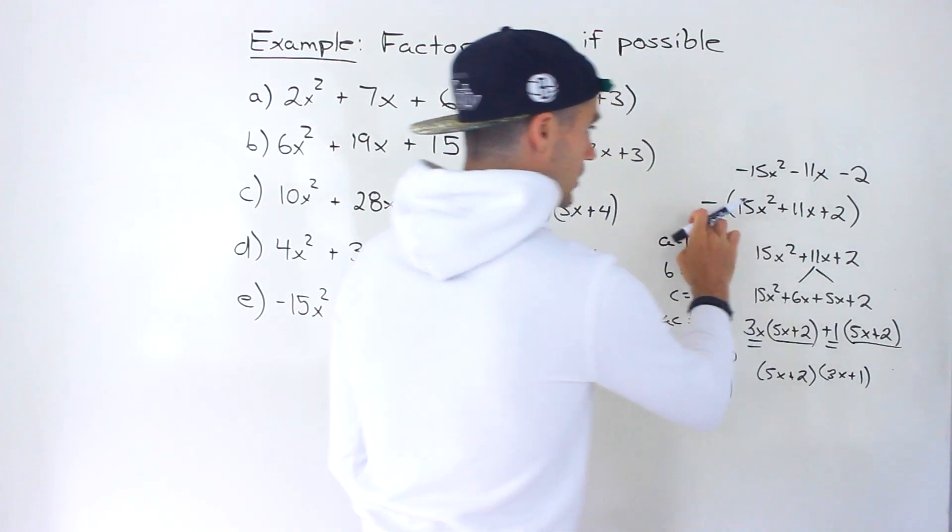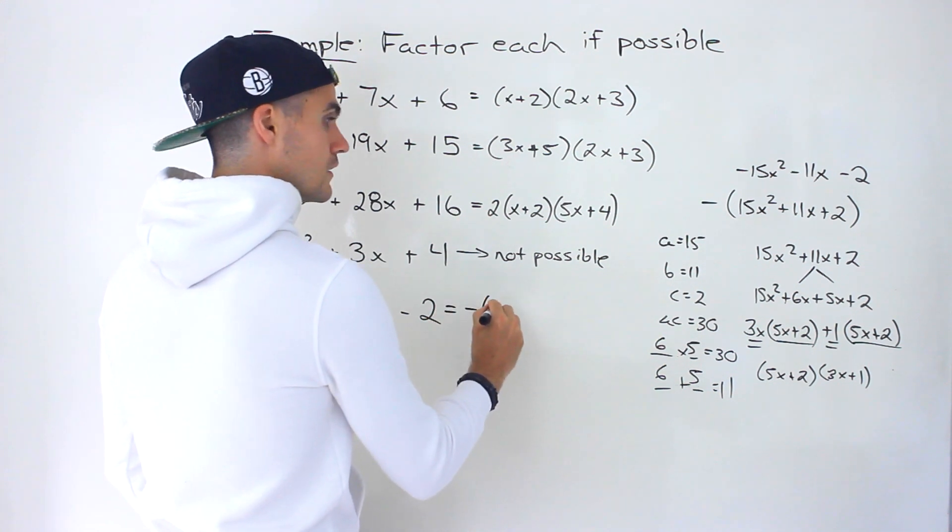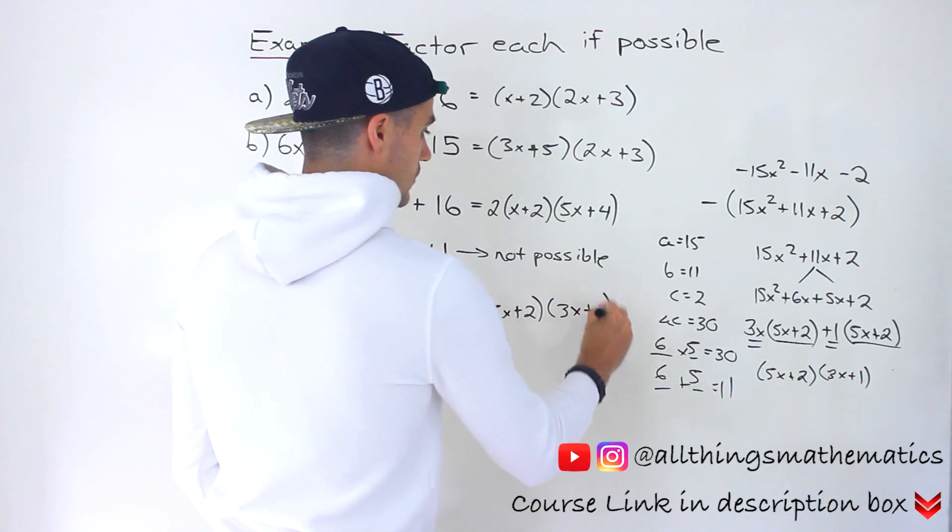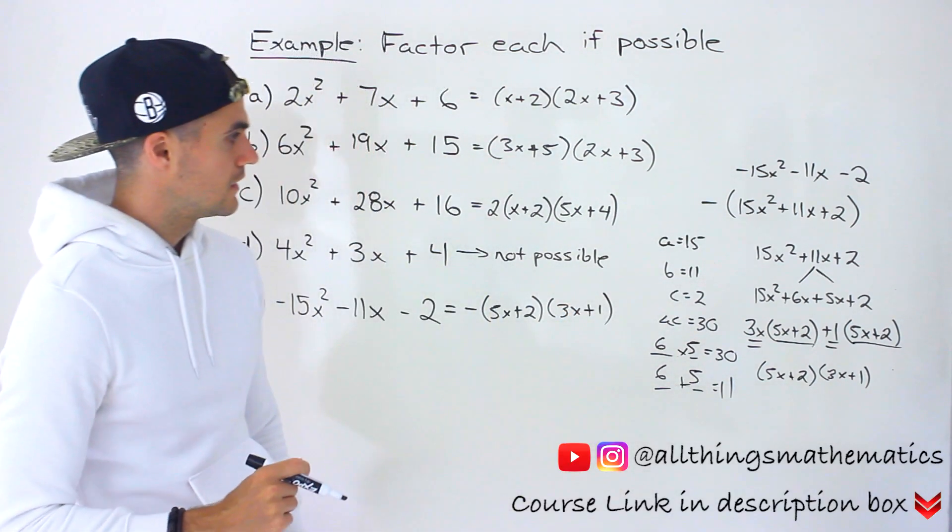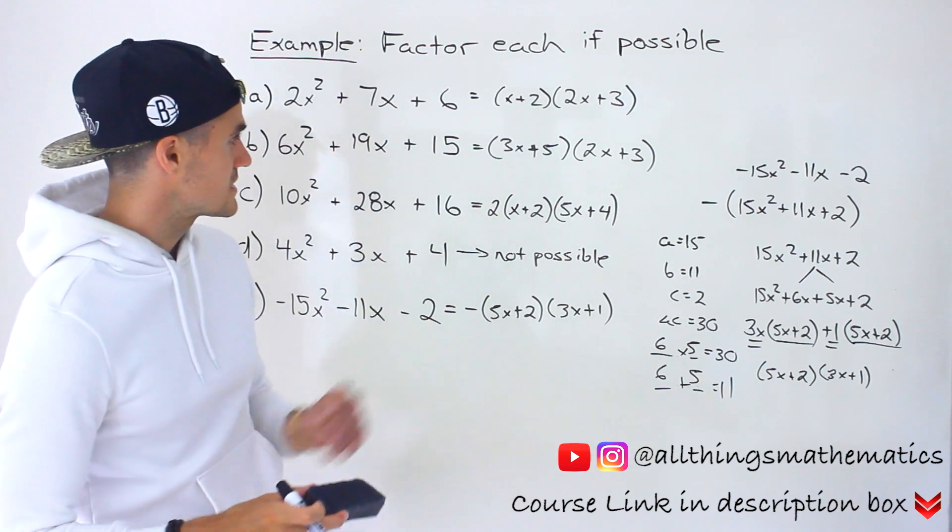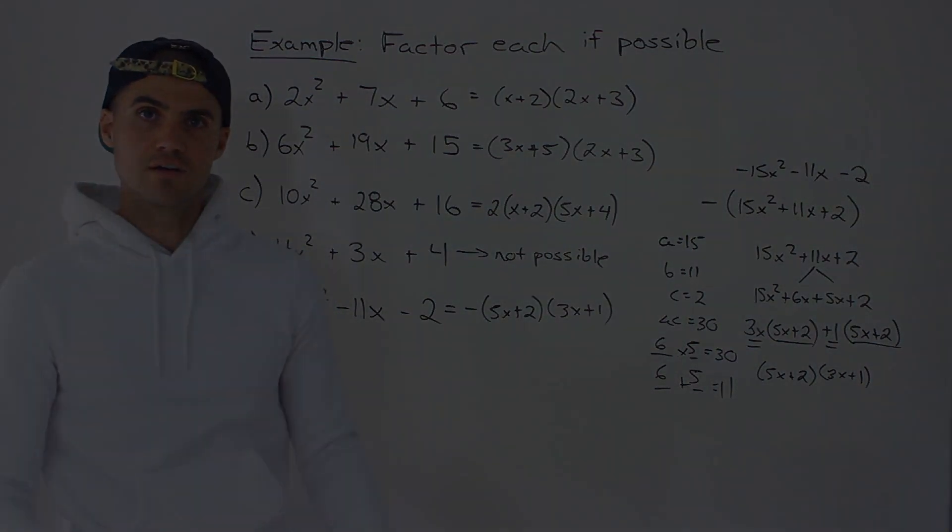But going back to our main work, don't forget we took that negative out initially. So we've got a negative (5x + 2)(3x + 1). Just a couple of scenarios where that B value and that C value is positive. In the next video, we'll do different scenarios.